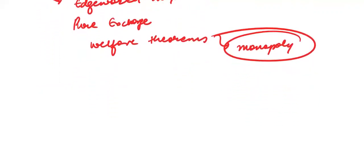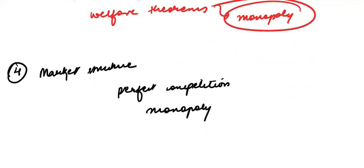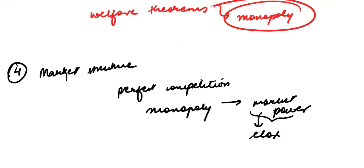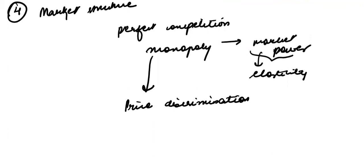The fourth topic is market structure. We will cover perfect competition and monopoly — expect at least one question on each. You will also get questions on market power, specifically finding the relationship between the market power index and elasticity. Then price discrimination: first, second, and third degree under monopoly. Oligopoly is also very important.